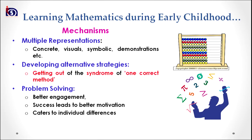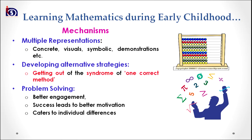The fourth mechanism is developing alternative strategies — that is, having alternative plans. It is essential to understand that if one plan works with some children, it is not guaranteed that it will work for others. Looking at individual differences, we need alternative strategies to facilitate learning of mathematics. We should also get out of the syndrome of one correct method and promote children to solve mathematical problems in innovative ways and come up with their own unique solutions. Problem solving should also be facilitated as a mechanism to learn mathematics — it ensures better engagement and success, which leads to better motivation, and it caters to individual differences.